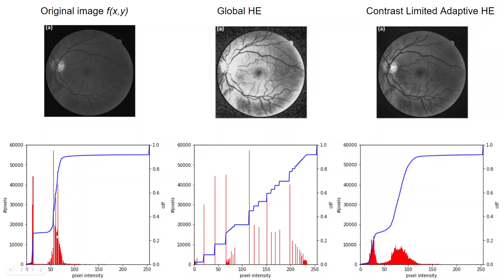If we apply global histogram equalization, this process will stretch the histogram so the cumulative density function will become linear, as shown in this image. But as a result, the image is too bright.